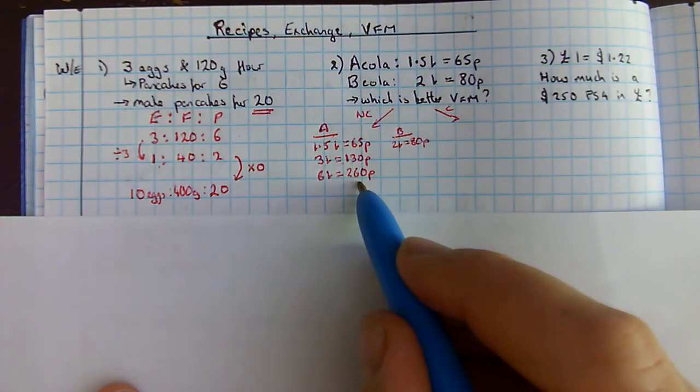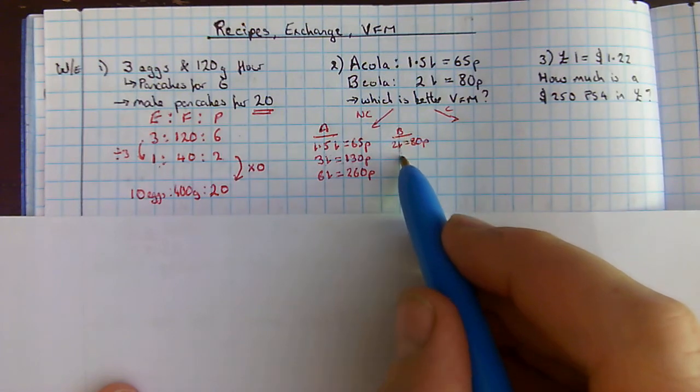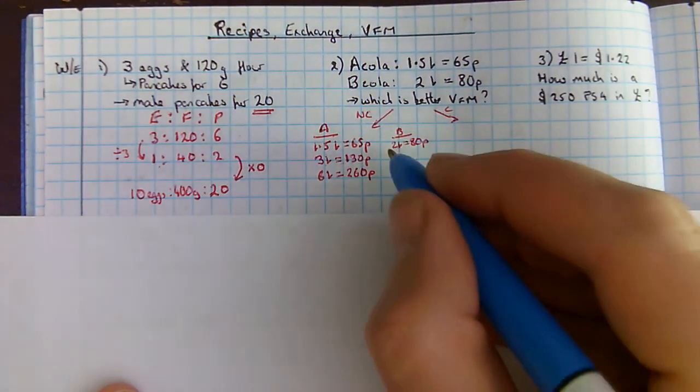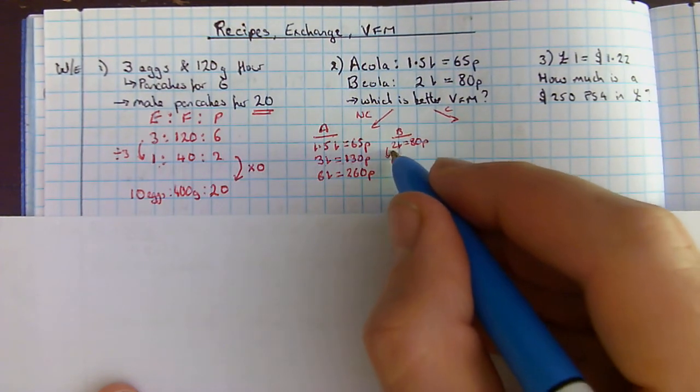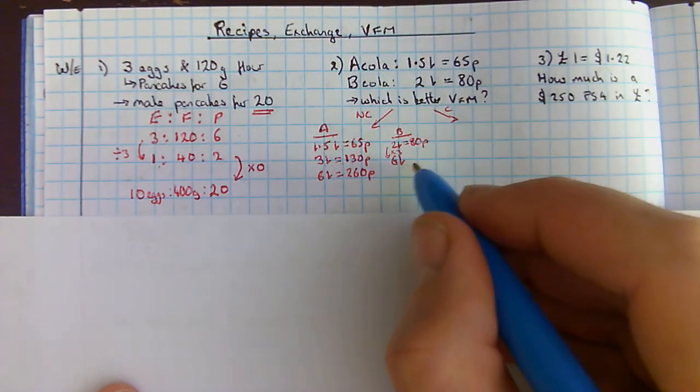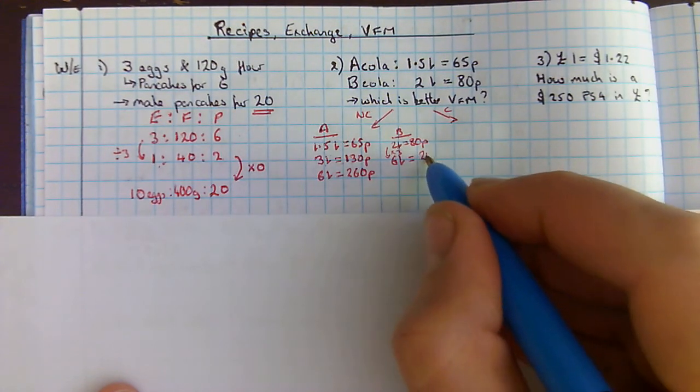Well, that's quite helpful. Because if I can now multiply for B to get 6 litres, so I'm going to need to times it by 3. 6 litres times that by 3, and it's times by 3 here, would give me 80 times 3 is 240p.